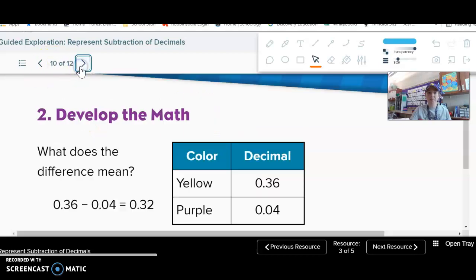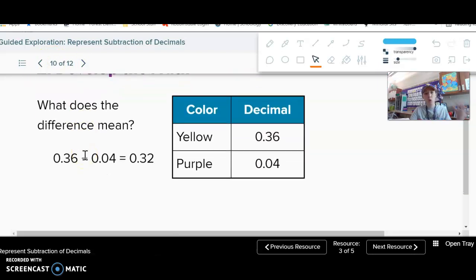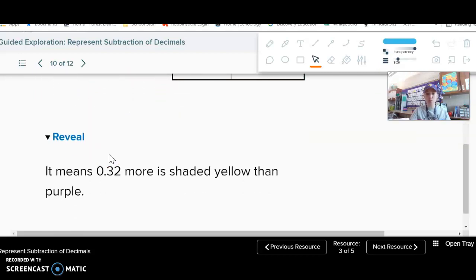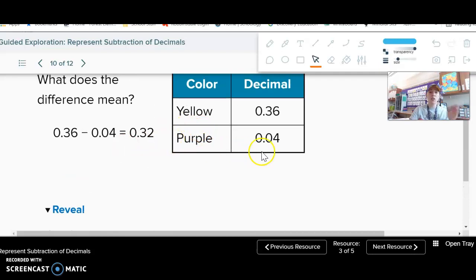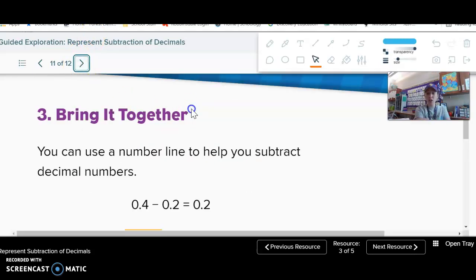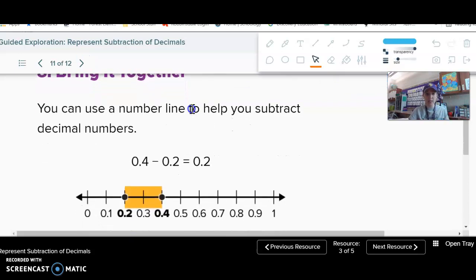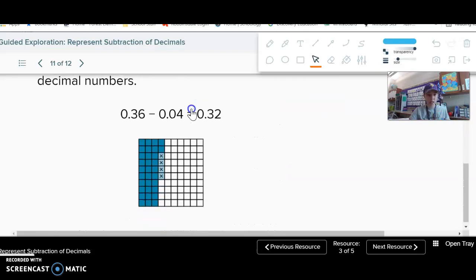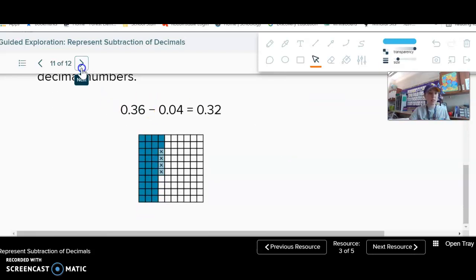So what does the difference mean? It means that thirty-two hundredths more is shaded yellow versus purple. That's really all this lesson is - the way to visualize subtraction. We'll go into other strategies we can use for subtraction in later lessons, but for now we'll just talk about the number lines and the decimal grid. So we'll do some practice together.